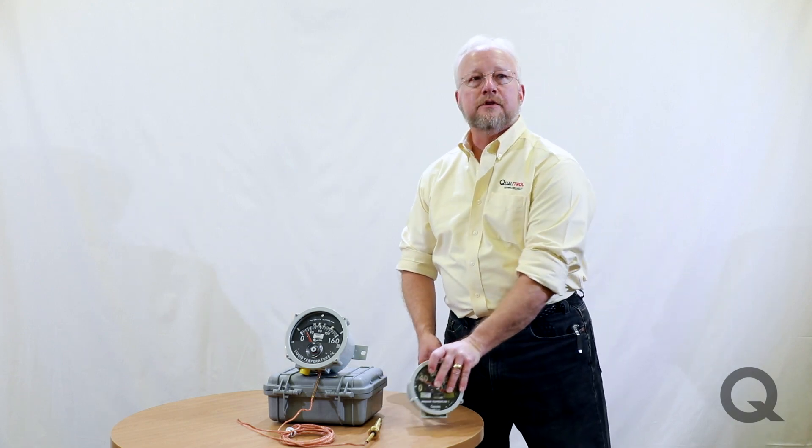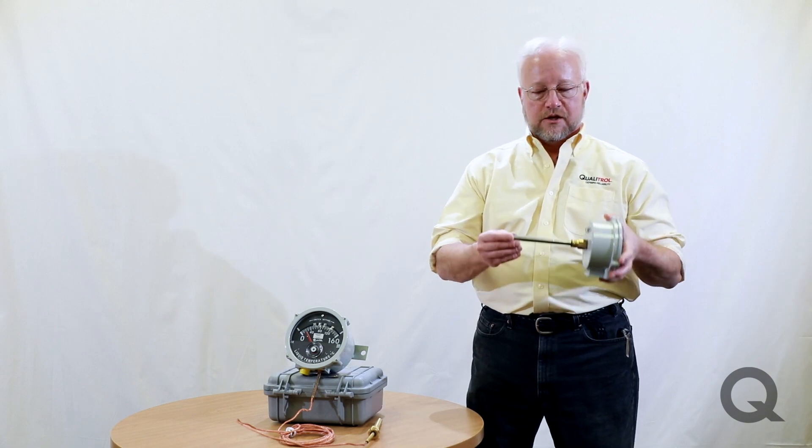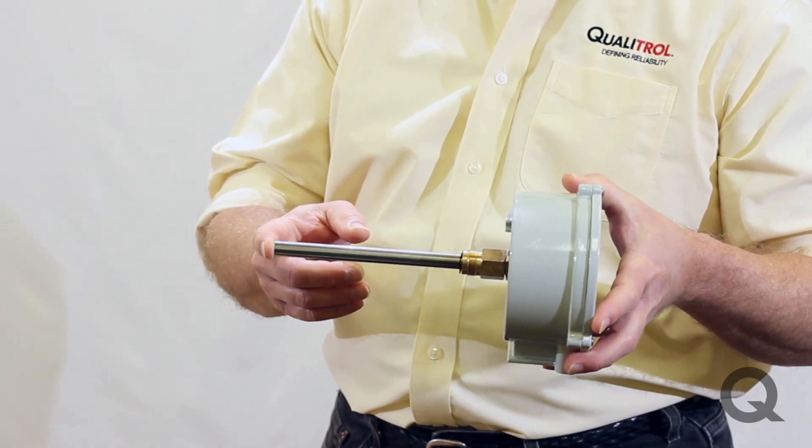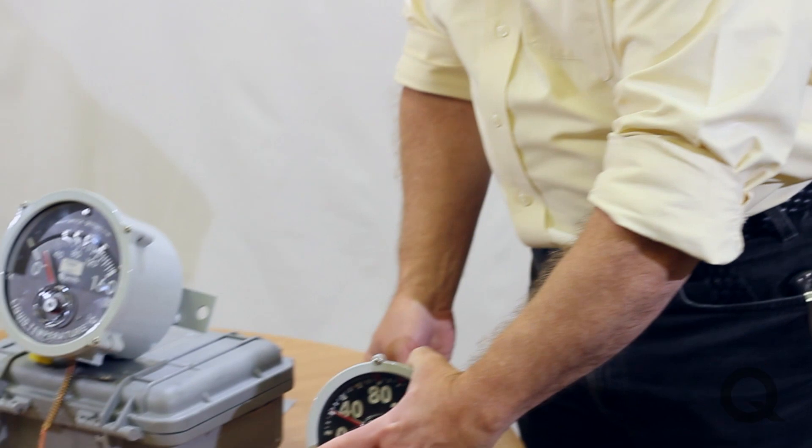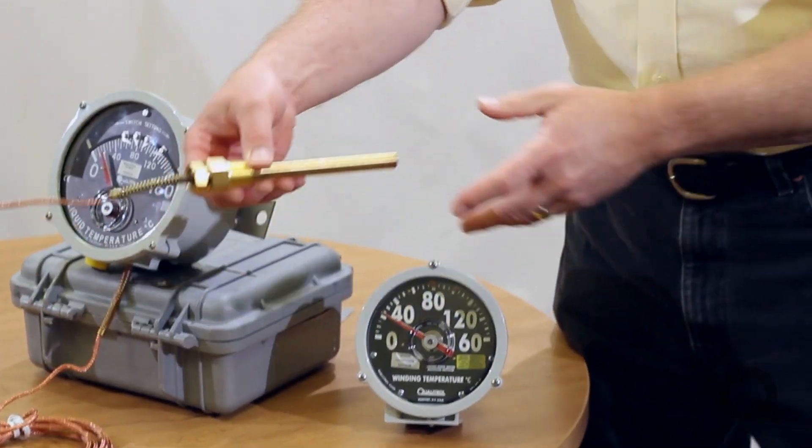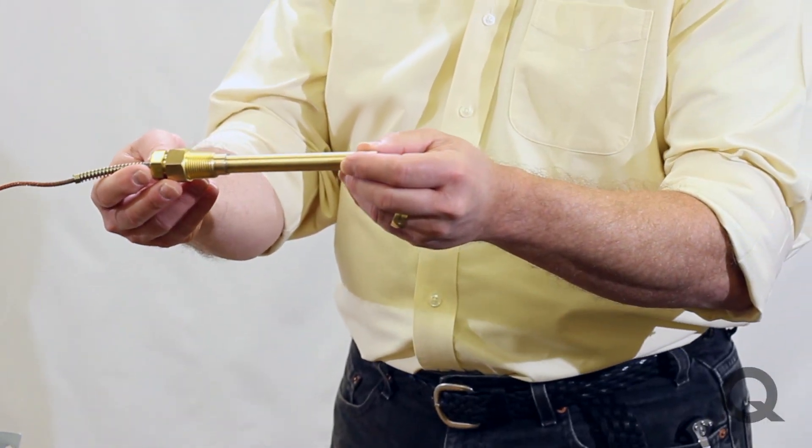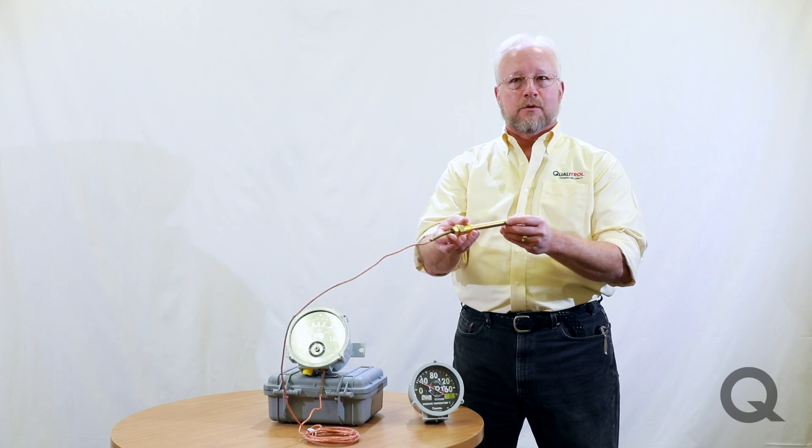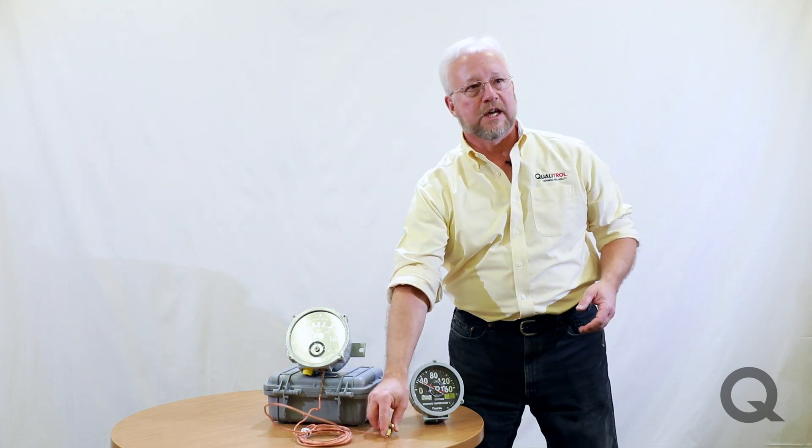There are two basic types of thermometers, one's the direct mount and the other one is the remote mount. The direct mount is fairly easy to tell because it's got a probe coming straight out the back. The remote mount will have a capillary tube that's connected to the probe that goes right into the transformer dry well at some remote location.